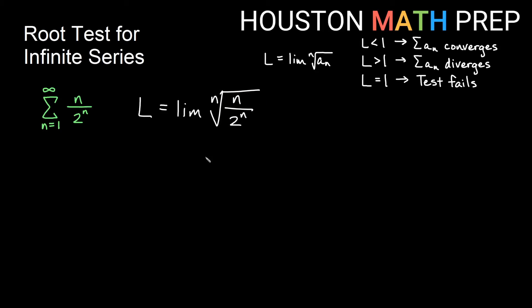We sort of have different ideas here. If I break up the top and the bottom separately, so that would be the limit of, on the top I would have the nth root of n, and on the bottom I would have the nth root of 2^n.